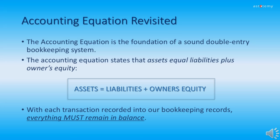Now we revisit the accounting equation. Remember from our previous lesson that the accounting equation is the foundation of a sound Double Entry Bookkeeping System. The basic accounting equation states that assets equal liabilities plus owner's equity. With each transaction recorded into our bookkeeping records, everything must remain in balance. These accounts make up the items on the balance sheet, and we will be working strictly with the balance sheet accounts in this module.